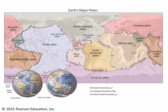These plates can consist of continents, they can consist of the rock that floors the bottom of the ocean basins, or both. So like the North American plate, for instance, includes both continental lithosphere and oceanic lithosphere.